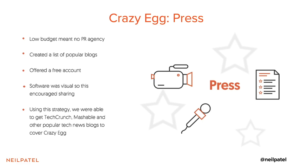We also decided to get a lot of press, but we didn't have money to pay a PR agency. So we created a list of all the popular blogs we wanted to target that we also felt could use Crazy Egg to make their blog better. We offered them a free account and showcased how their visitors interacted with their blog. We used this strategy with TechCrunch, Mashable, and a lot of other popular tech sites. They did blog posts on us, showcased their own Crazy Egg heatmap within those posts, and it spread like wildfire — great comments, and it caused people to sign up on a beta invite basis.